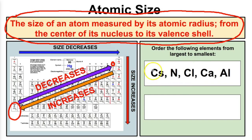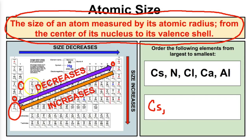Alright, if we take a look at these five atoms — cesium is going to be right here on the periodic table, so this one is going to be our largest of the five atoms. Next we have calcium, which is right here on the periodic table. And then we're going to have nitrogen, which is right here on the periodic table — it's covered by the little arrow.